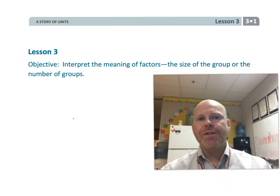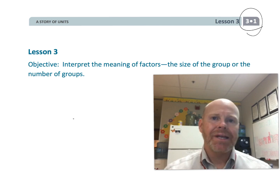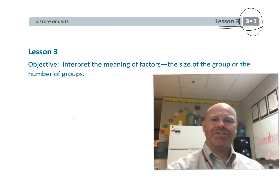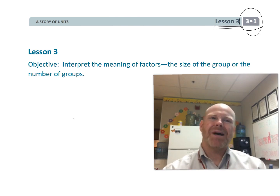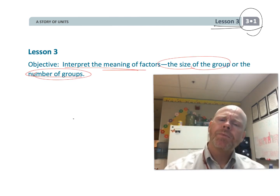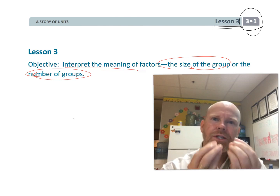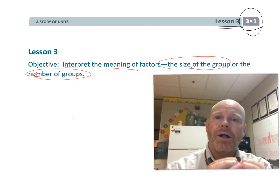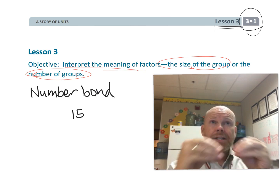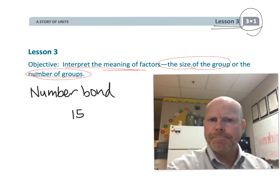This is grade three, module one, lesson three. In this lesson, students are going to be interpreting the meaning of factors, and we're going to be talking about the size of groups versus the number of groups. We're also going to be introducing a new idea called number bond, and a number bond is with addition — that's how it's going to be connected to our multiplication lesson.